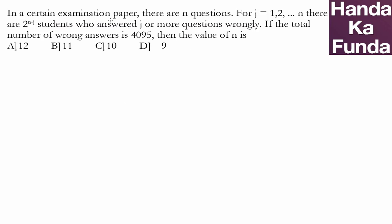Hi, we are talking about an exam paper where there are n questions. For j equals 1 to n, there are 2 to the power of n minus j students who answered j or more questions wrongly. So first of all, we need to understand what does this mean?